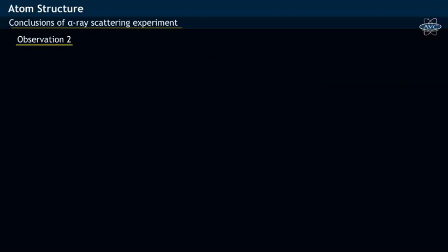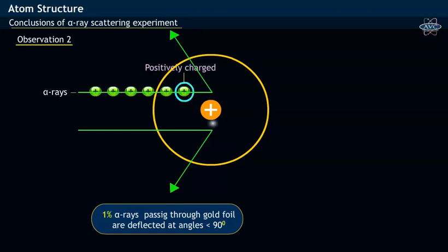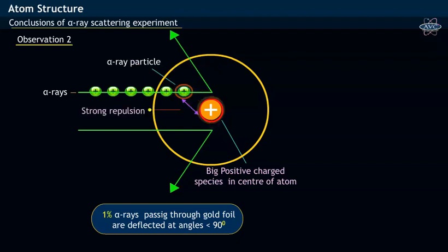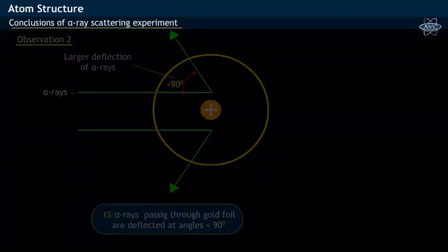From the second observation that deflection of only 1% of alpha rays through large angles, Rutherford indicated that alpha rays being positively charged when passed close enough through another very big positively charged body, the alpha particles are strongly repelled and hence deflected through large angles.